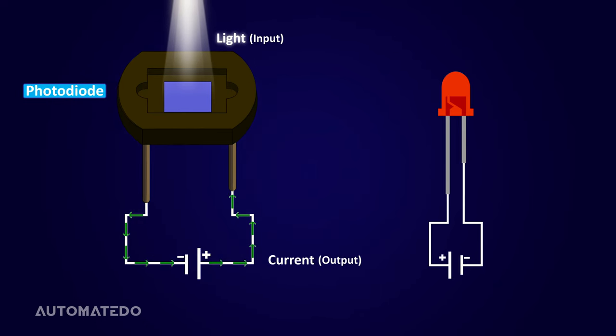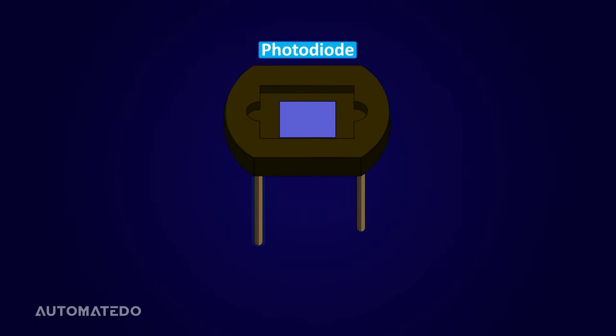The function of a photodiode is the opposite of an LED. An LED is also a diode but makes light out of electricity. As you can see, two terminals protrude from the end of a photodiode.